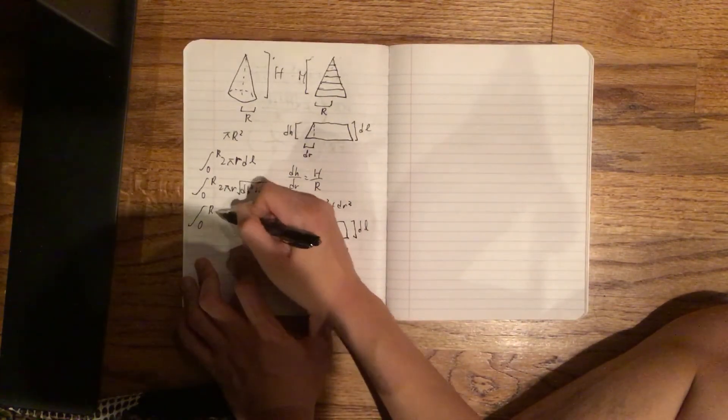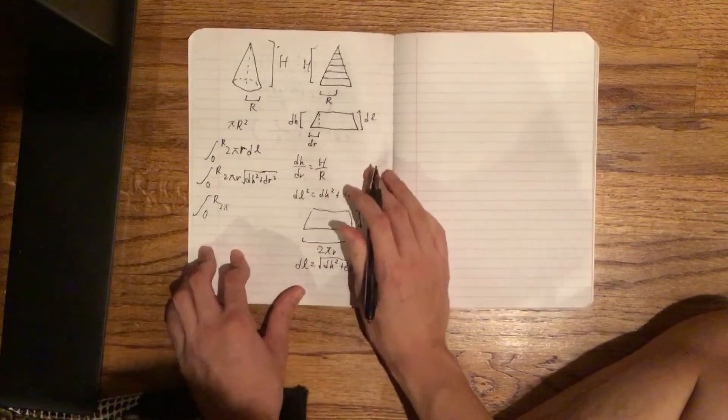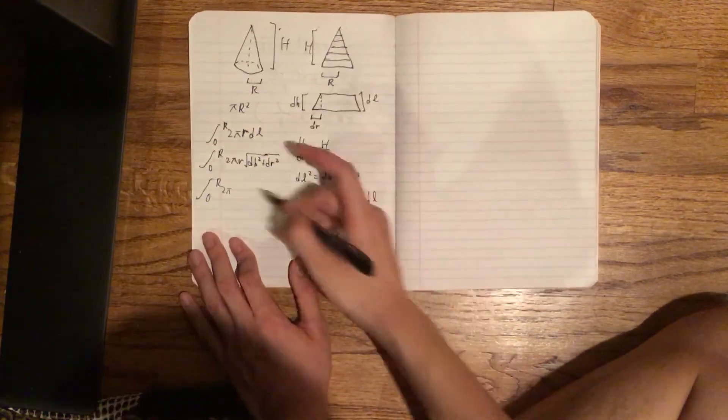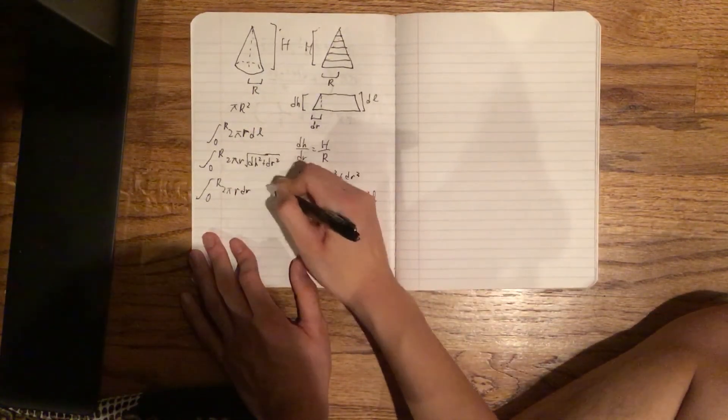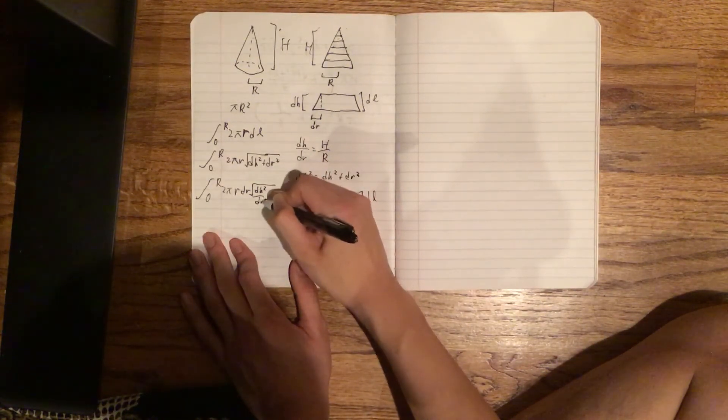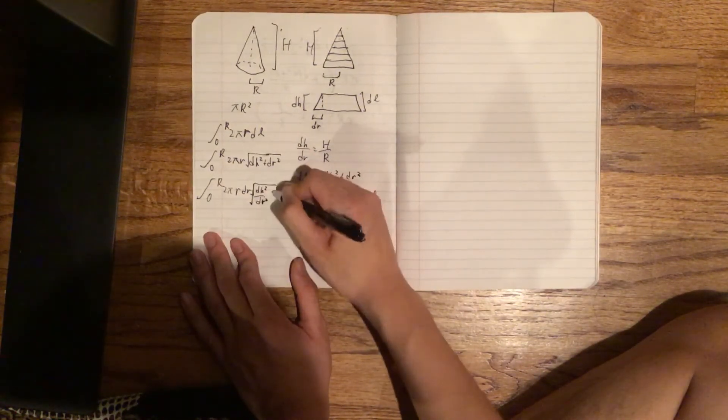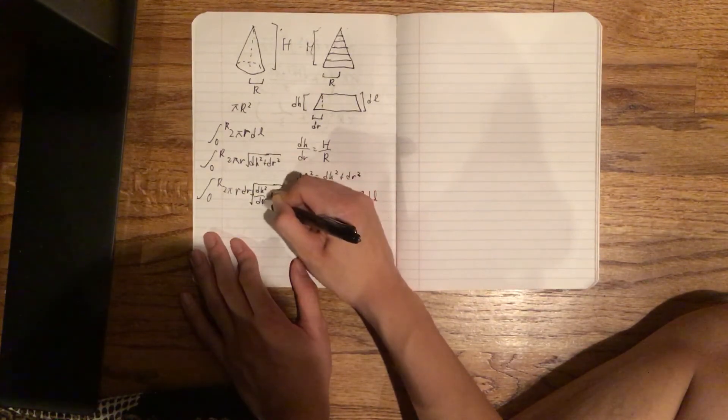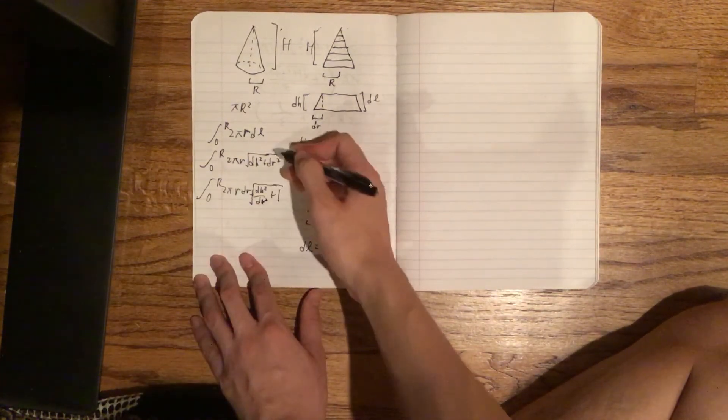So we get 0 to r, 2πr dr. And if you know your algebra rules, you get √((dh/dr)² + 1). We just multiply dr back in to get that.